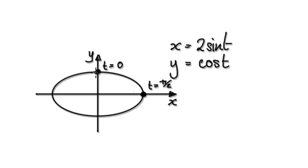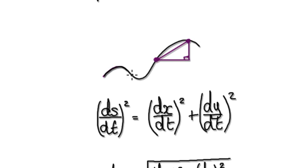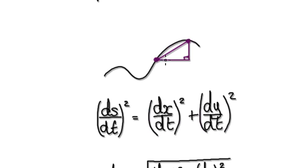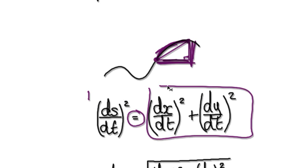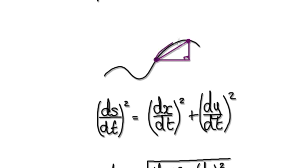To obtain the arc length of an ellipse, we start with the idea that the speed along the actual path is approximately the speed in the x-direction squared plus the speed in the y-direction squared. Then as you take the limit as t tends to 0, you can say the actual speed equals this expression here.